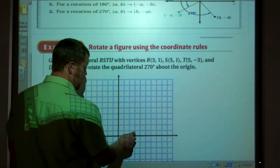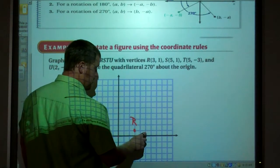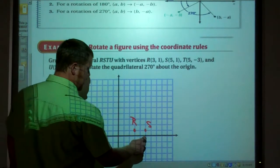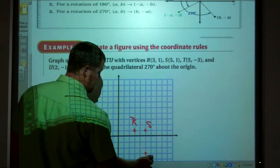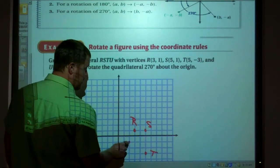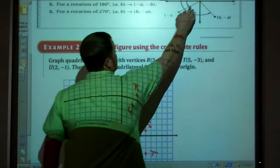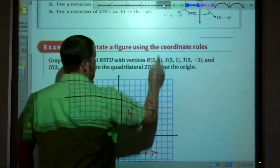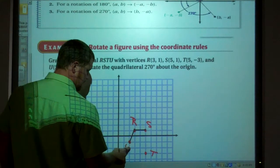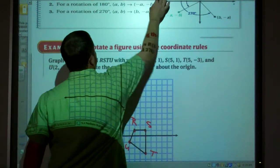R is at (3, 1). There's point R. Point S is at (5, 1). Point T is at (5, -3). And U is at (2, -1). So I have my figure. There's my quadrilateral.